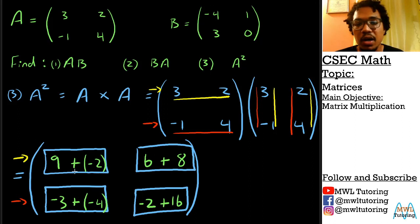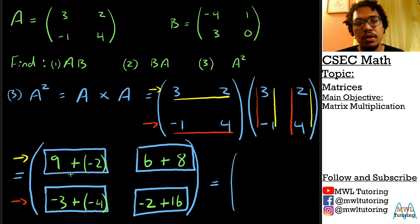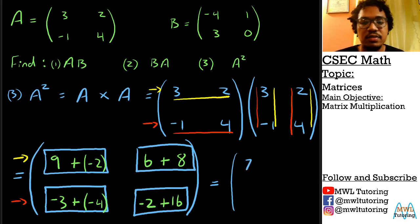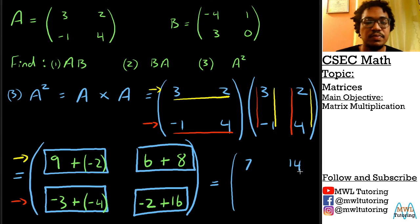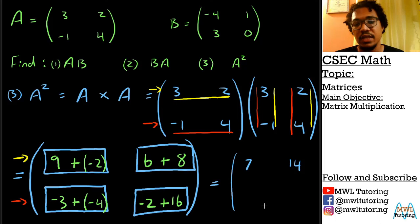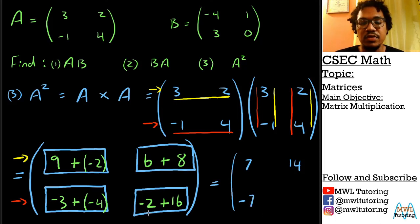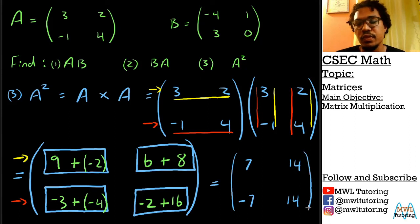Now we simplify the boxes to get our answer: 9 plus negative 2 gives us 7, 6 plus 8 gives us 14, negative 3 plus negative 4 gives us negative 7, and negative 2 plus 16 gives us positive 14. And that is our answer for the last question.